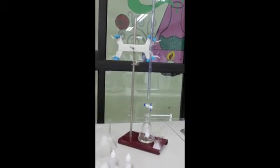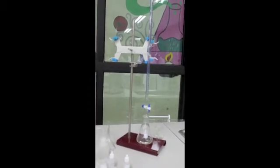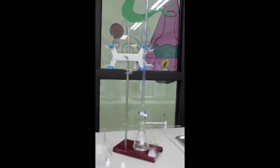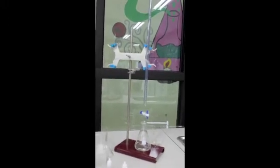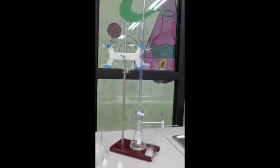Next, rinse the burette with the titrant that will be used in the titration. Let the titrant flow out of the tip, and make sure that there are no bubbles present at the tip and the tip is not leaking. This will ensure accurate results.